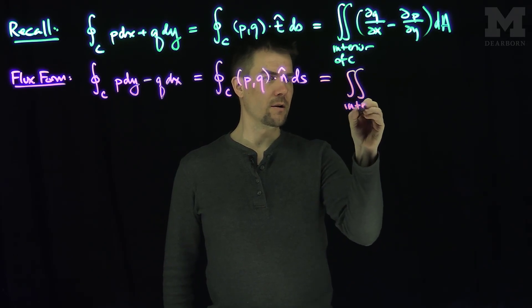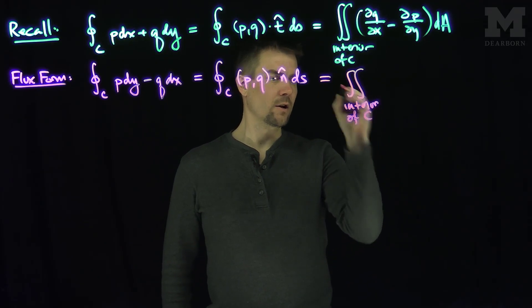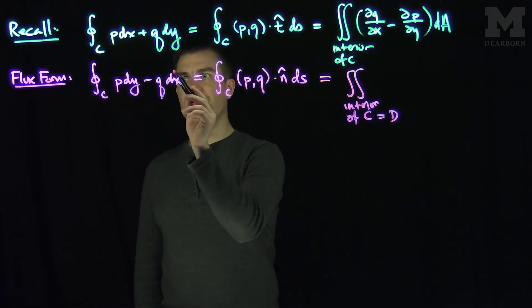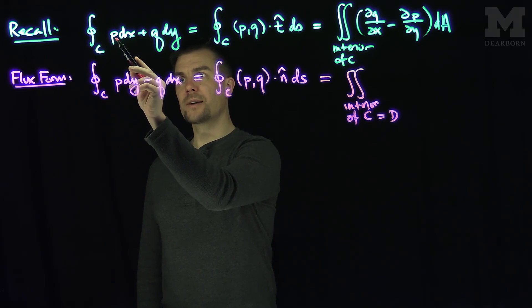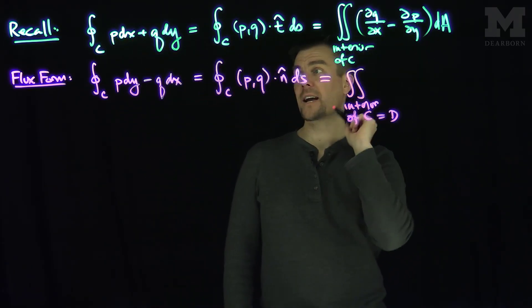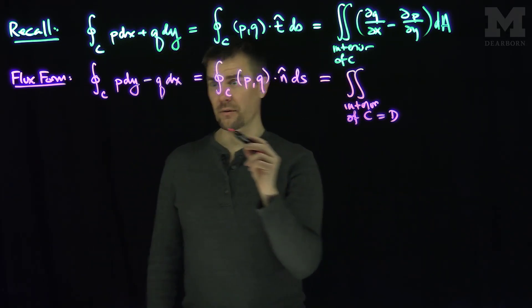So we can do the same sort of calculation by Green's theorem. This is the double integral over the interior of c, which we'll just call d for simplicity for a domain. And then what I would do in this case, to do the term that has a dx, the dx term gets a negative y derivative, and the dy term gets an x derivative.